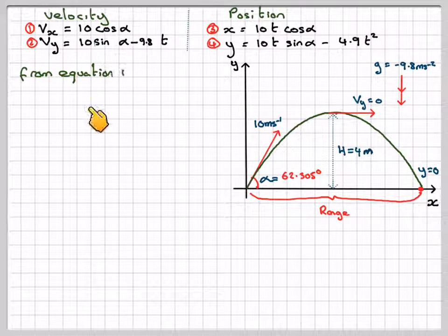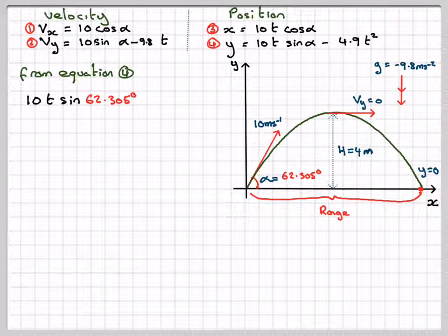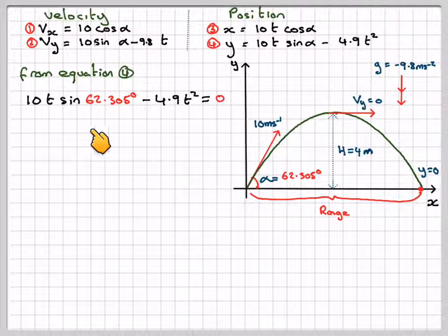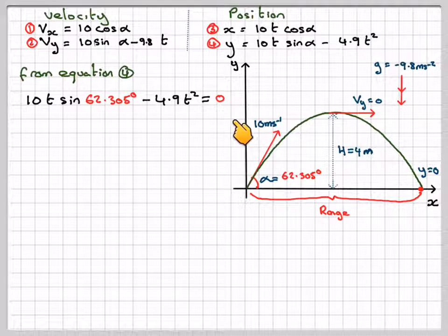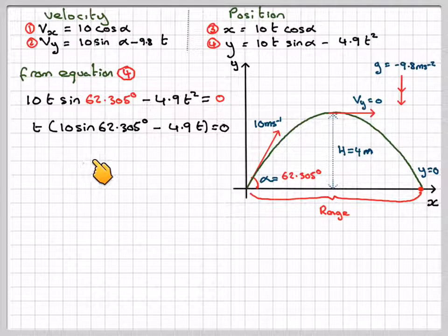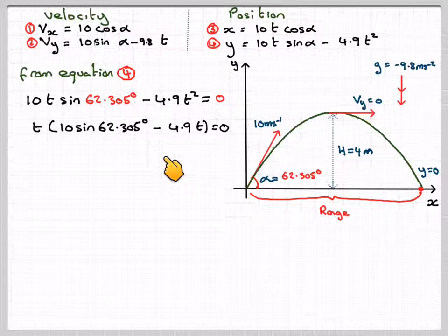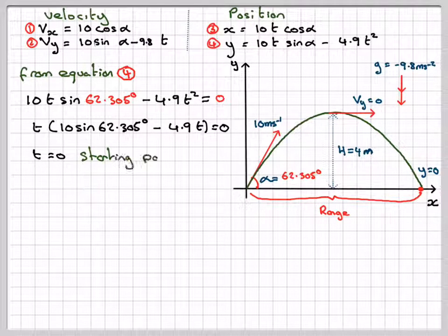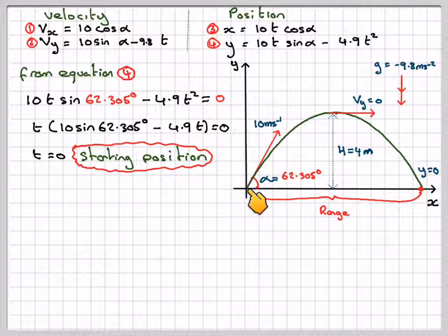From equation 4, 10T sin 62.305 minus 4.9T squared equals 0. Taking out a common factor of T, we get 10 sin 62.305 degrees minus 4.9T equals 0. T equals 0 is the starting point.